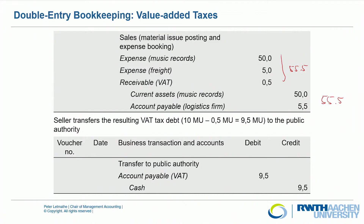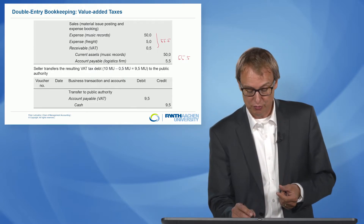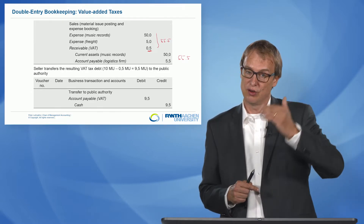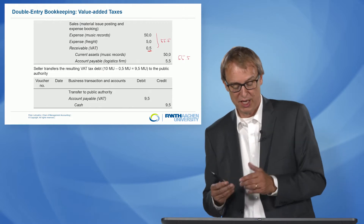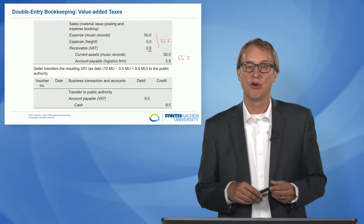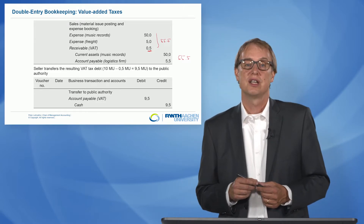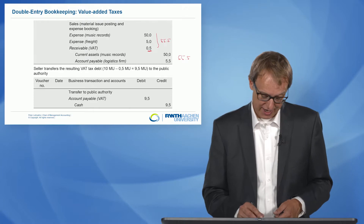At the end, I have to pay the financial authority. The financial authority receives 9.5 euros — that is the value-added tax on our music record of 10 euros minus the 0.5 euros we paid to the logistics company, an overall difference of 9.5 euros. We have an account payable to the financial authority of 9.5 euros, and when we pay it, our cash is reduced by 9.5 euros. So those are the book records related to value-added taxes.